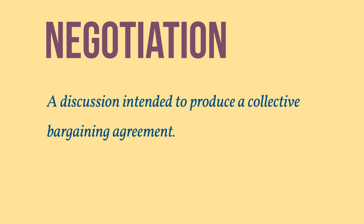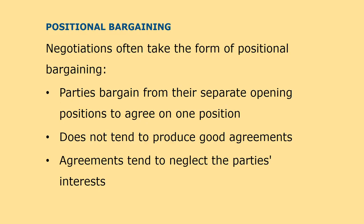Negotiation is a discussion intended to produce an agreement. In negotiating a collective bargaining agreement, the employer and union seek agreement on the terms and conditions of employment. Negotiations often take the form of positional bargaining. In positional bargaining, each party opens with their position on an issue, then the parties bargain from their separate operating positions to agree on one position. Haggling over a price is a typical example of positional bargaining.